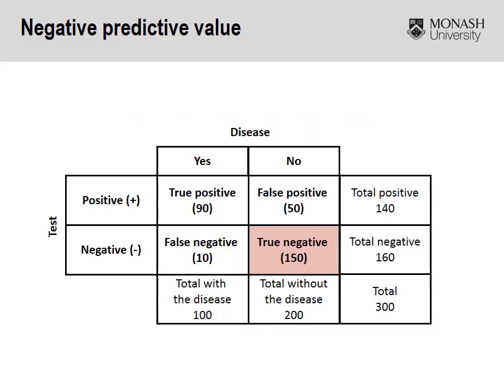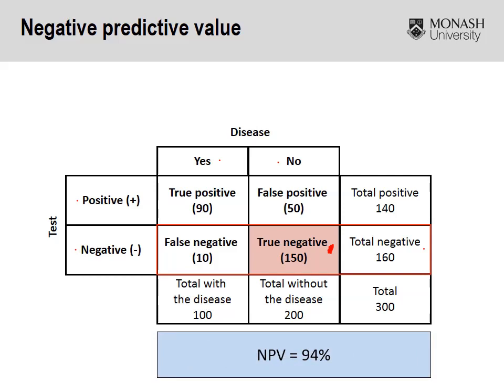This 2x2 table, with the same hypothetical numbers, illustrates the negative predictive value. Disease yes or no, and people test positive or negative to the test. What we're really interested in is the true negative divided by the total negative. In this case, the negative predictive value is 94%. What it's basically saying is: if you test negative to this test, there's a 94% chance that you don't have the disease or outcome of interest.